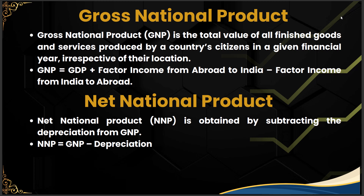Net national product (NNP) is obtained by subtracting depreciation from GNP — similar to how NDP is derived from GDP. The formula is: NNP = GNP − depreciation.